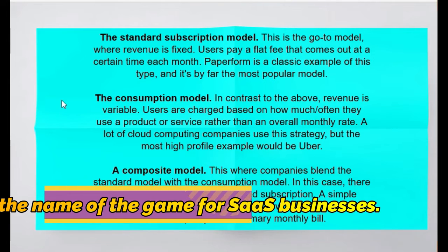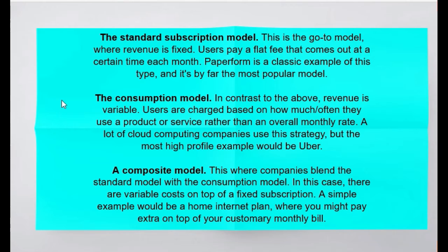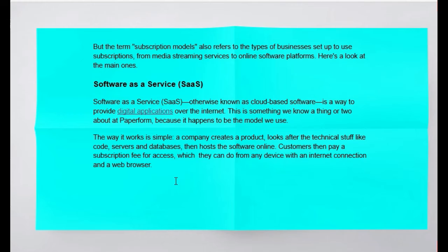There is also the composite model, where companies blend the standard model with the consumption model. In this case, there are variable costs on top of a fixed-fee subscription. A simple example would be a home internet plan where you might pay extra on top of your customary monthly bill.